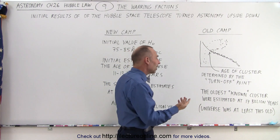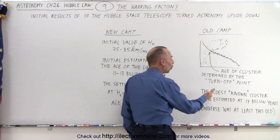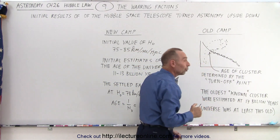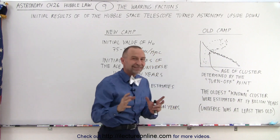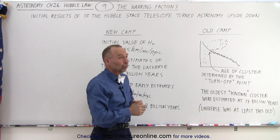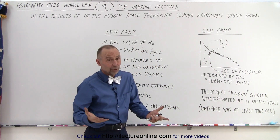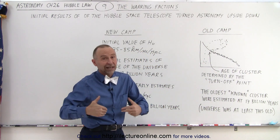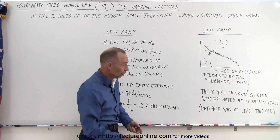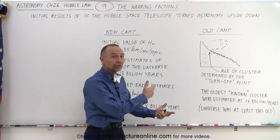Based upon that method, the oldest known clusters were aged to be 17 billion years old. That means that our universe had to be at least 17 billion years old, probably a little bit older than that.